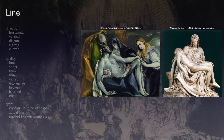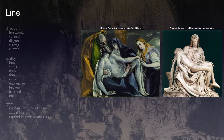We'll continue looking at the El Greco and the Michelangelo. We need to look for lines that aren't necessarily brush strokes, but are larger lines that are whole shapes or whole areas. So the first thing we want to look at is the direction of those lines, and really there are only about five types of direction lines.